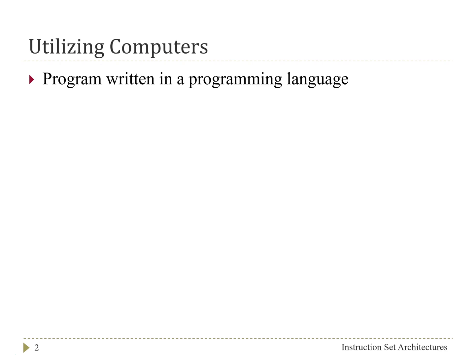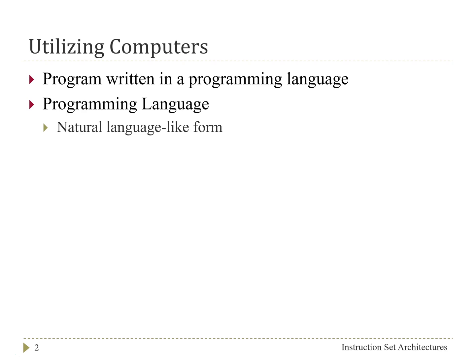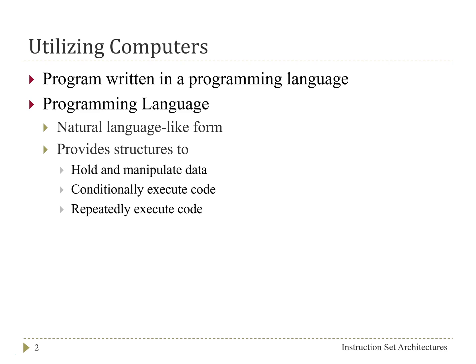There are lots of different programming languages, but they all have a number of common features. For a programming language, it generally takes on a somewhat natural language-like form. While it's not exactly like the languages that we speak and write, it does have elements that are similar, allowing it to be relatively easily understood. Common programming languages have similar structures that allow you to express the types of operations you need to achieve your goal.